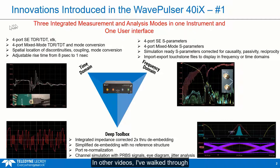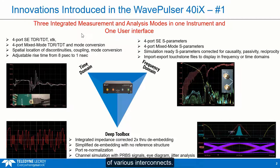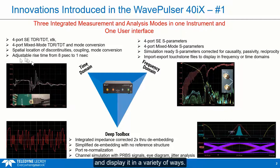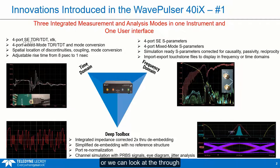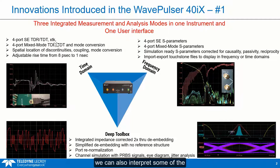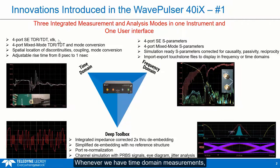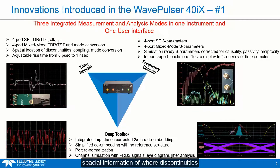In other videos, I've walked through how we can use the WavePulsar 40IX to measure the time-domain performance of various interconnects. We can take that time-domain performance and display it in a variety of ways — for example, as the TDR response from each of the four ports connected to the device under test, or we can look at the through transmitted signal, or depending on the connections, we can also interpret some of the time-domain measurements in terms of crosstalk. Whenever we have time-domain measurements, we can use that information to give us spatial information of where discontinuities or other features are located.